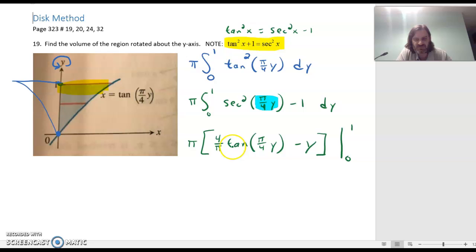If we took the derivative of tangent, we'd get secant squared. If we took the derivative of pi over 4y, we would get pi over 4, which would cancel the 4 over pi on the outside. You can do a u-substitution with that, and I encourage you to do it because that's the way it should be done. But for sake of time and space, I'll just leave it out. Now we need to let y equal 1 and we need to let y equal 0.